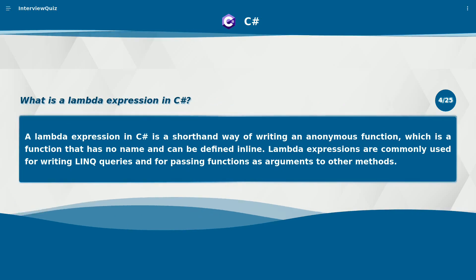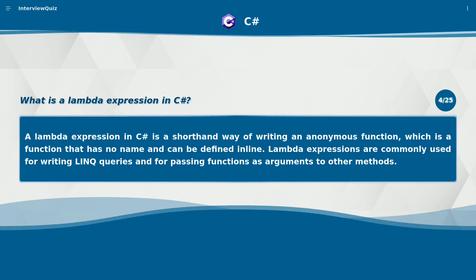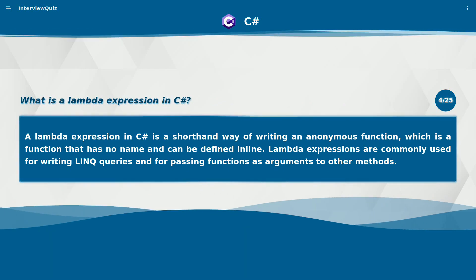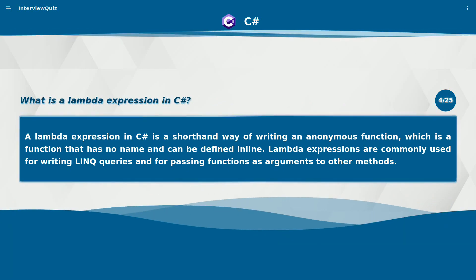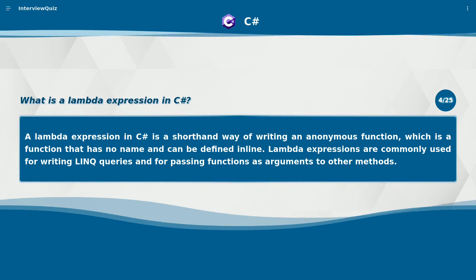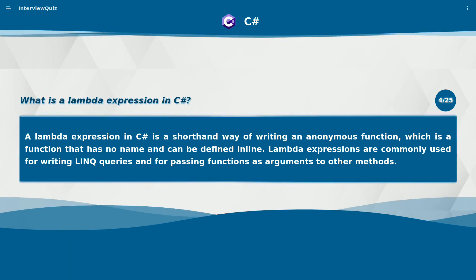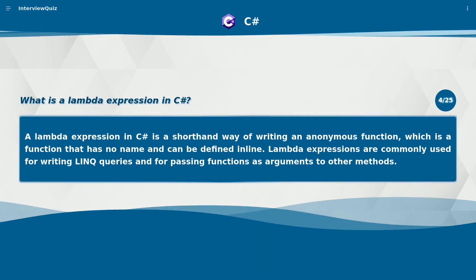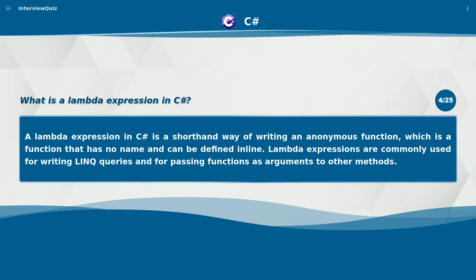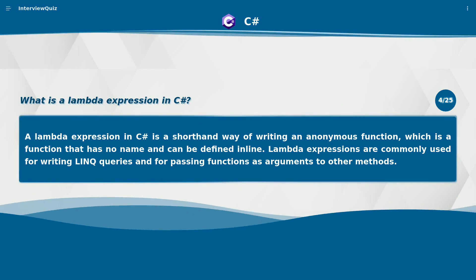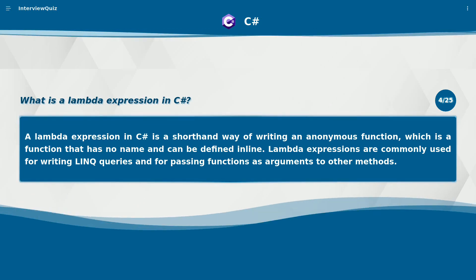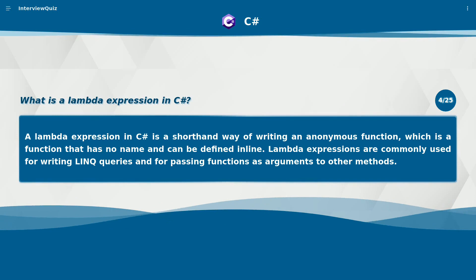A lambda expression in C# is a shorthand way of writing an anonymous function, which is a function that has no name and can be defined inline. Lambda expressions are commonly used for writing LINQ queries and for passing functions as arguments to other methods.